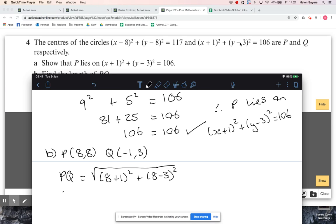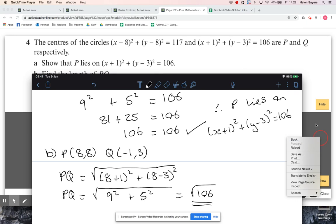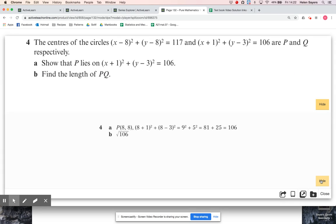This is going to give me 106 again, I think. I'm just wondering why it seems to relate to that one. Okay, never mind. So 9² + 5² = 106, so PQ is √106. Yeah, we're good.